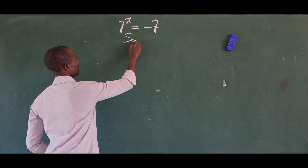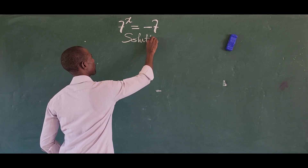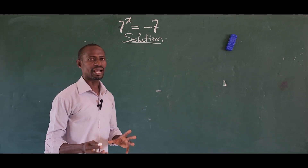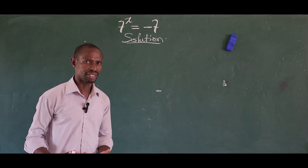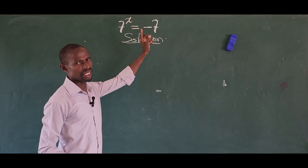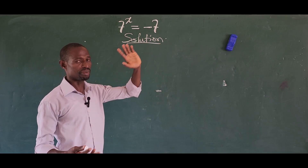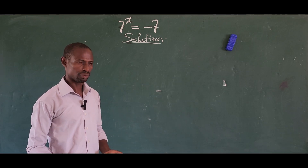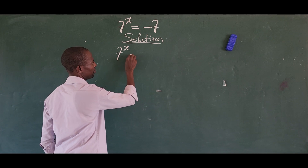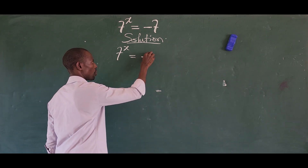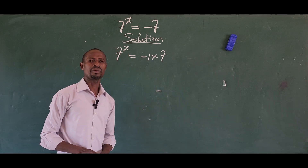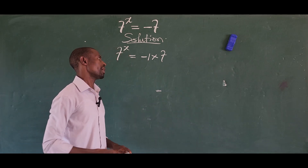Let's take our solution. The first thing we're going to do is rewrite the right-hand side of this equation. So minus 7 can be separated and written as minus 1 times 7, which is positive 7. So this gives us 7 to the power of x is equal to minus 1 times 7, and minus 1 times 7 gives us minus 7.